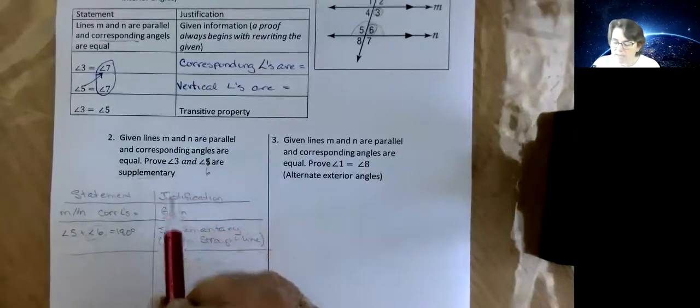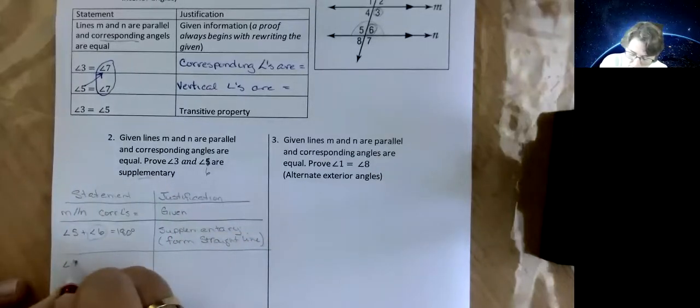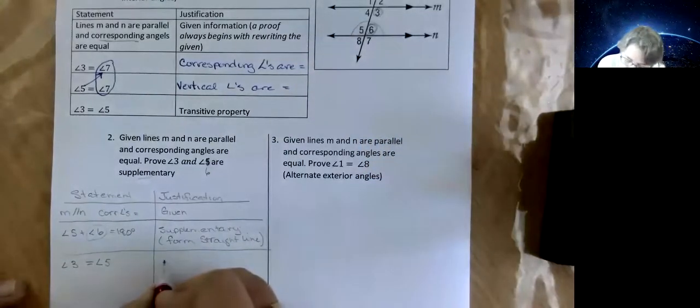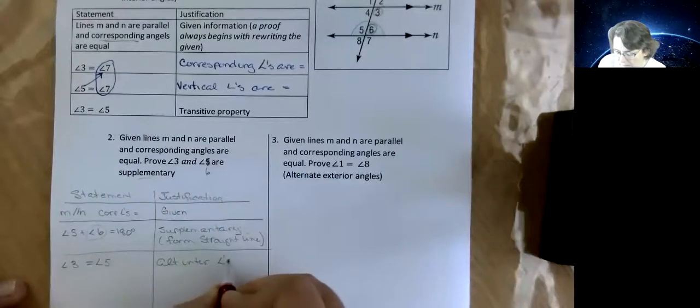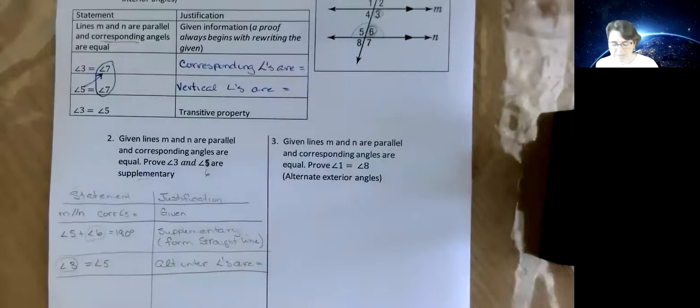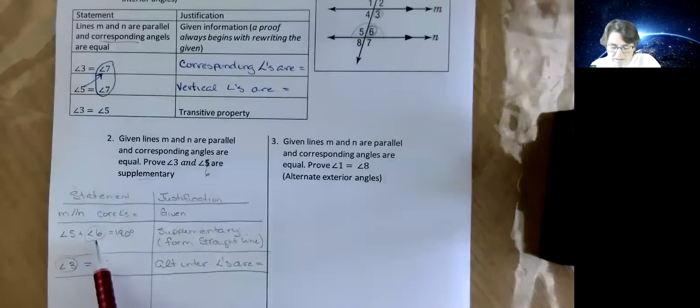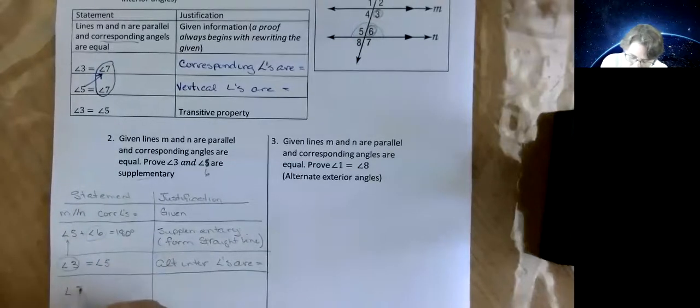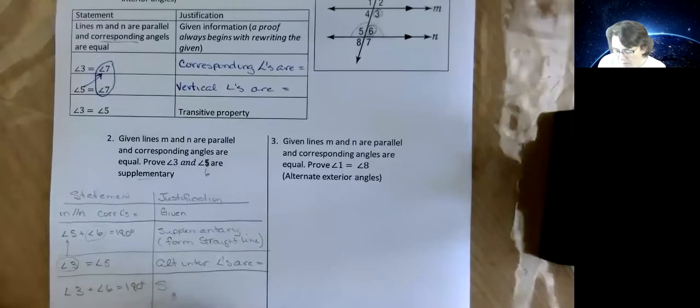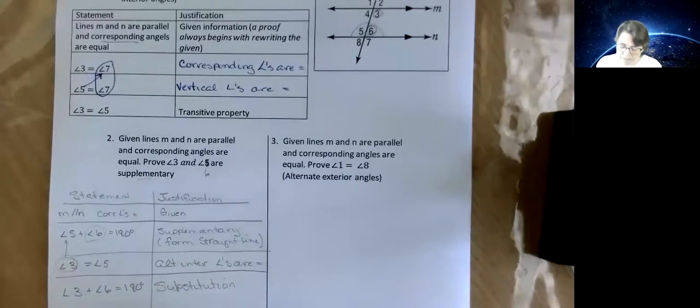So now we're getting, we've got the supplementary part figured out now, and we've also got angle 6 in there. Now we have to connect it to angle 3. So we can say angle 3 is equal to angle 5. What was the reason again? You look at the diagram. Alternate interior angles are equal. So now we've got, look at that, there's our angle 3 that we want, there's our angle 6 that they want, and what we can do is we can do a substitution. Because angle 5 is the same as angle 3. So angle 3, I'm writing that instead of angle 5 because they're the same size. And that is substitution.